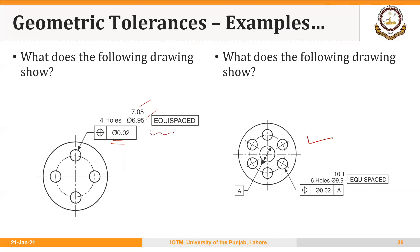We can use notes on drawings — for example, instead of mentioning dimensions we can write 'equispaced,' meaning each consecutive hole should be at 90 degrees with respect to each other. I recommend going through the notes and reading material on geometric tolerances, as we will need this concept repeatedly in this course, especially when designing inspection tooling. Thank you very much.